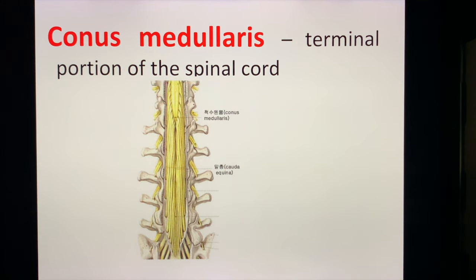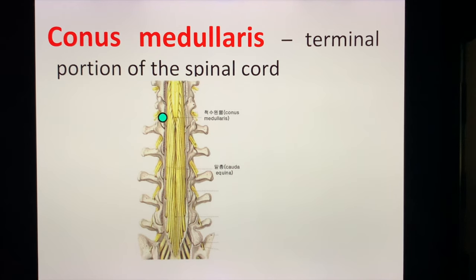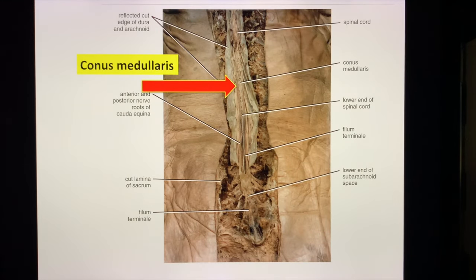Some terminologies you must bring with you to the examination. Number one is the conus medullaris. This is the terminal portion of the spinal cord. At the end of the spinal cord, it ends into this cone-like structure, which we call the conus medullaris. Here, at the tip of the red arrow, that's your cone-like structure — that's the conus medullaris.